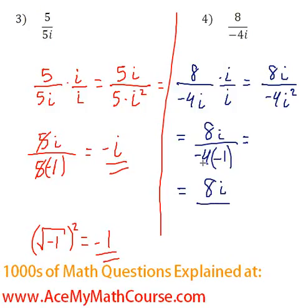So 8i, now 4 times negative 1 is just positive 4. And 8 divided by 4 is just 2. So the answer is 2i. And that's it.